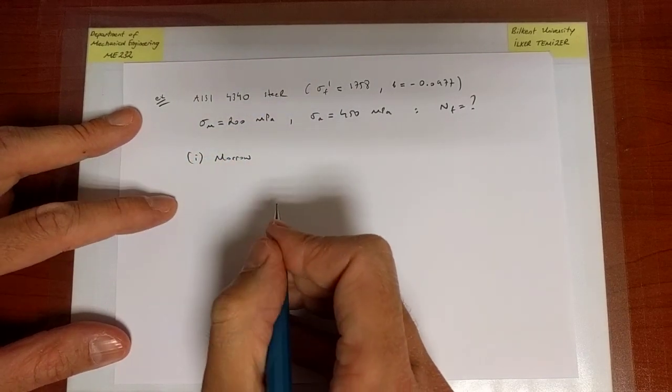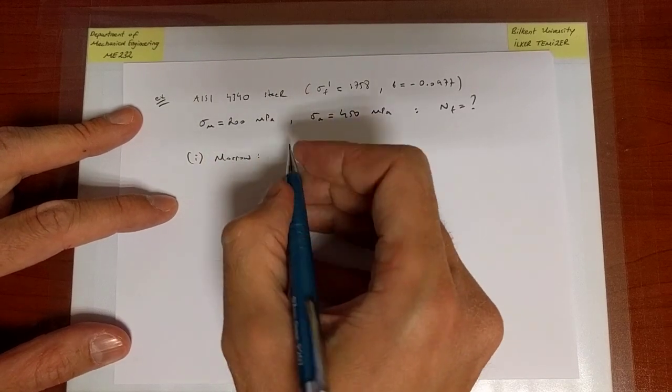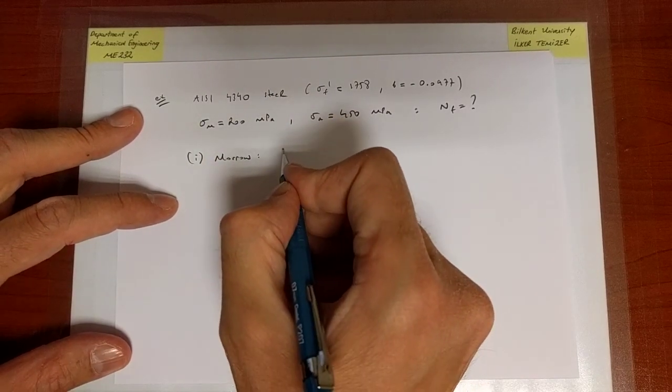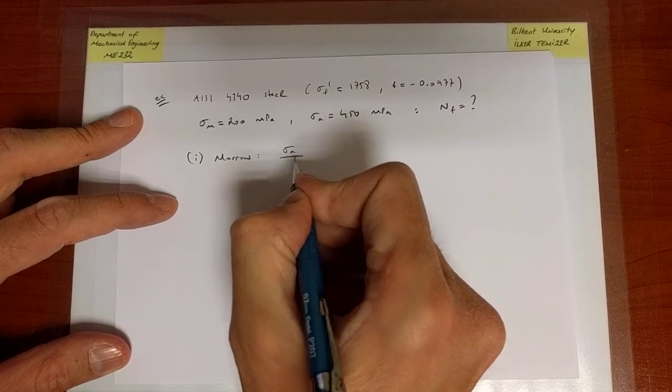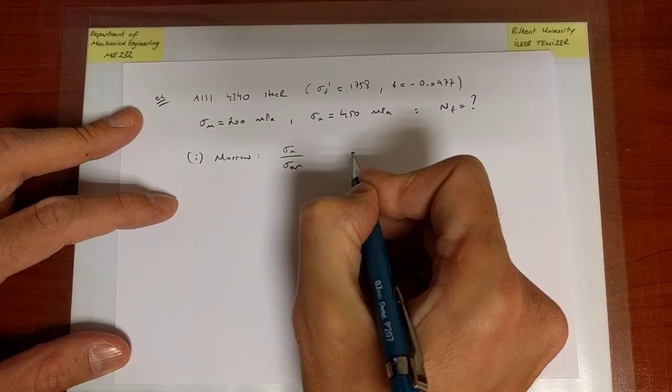Let's start with the Merrill relation. There isn't much we need to really memorize. If sigma a is equal to sigma a r, then we get failure.